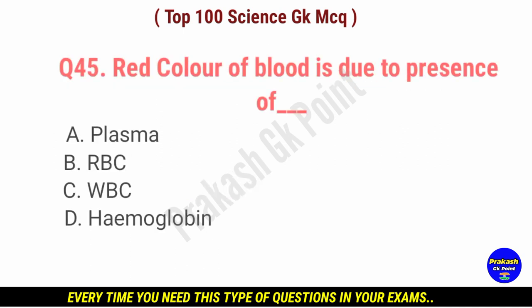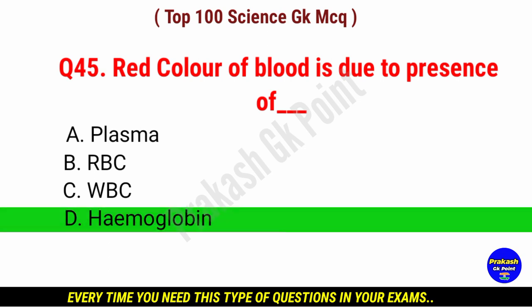Red color of blood is due to presence of dash. Answer: option D, hemoglobin.